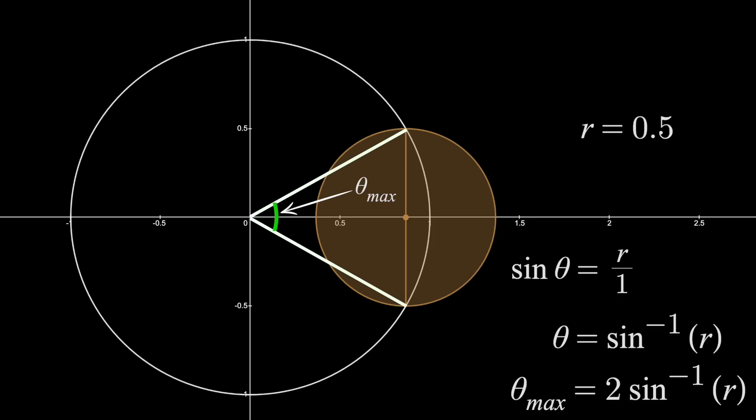So, like right now, r is 0.5. Plugging that in, we find this arc measure is pi over 3 radians, or 60 degrees. That's the maximum piece of the circumference that can be enclosed with this disk of radius 0.5.